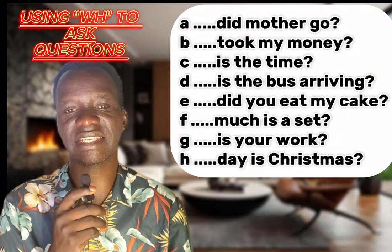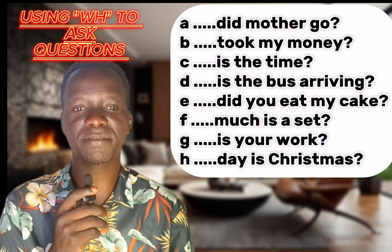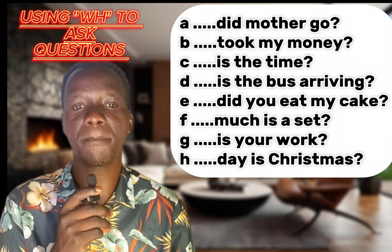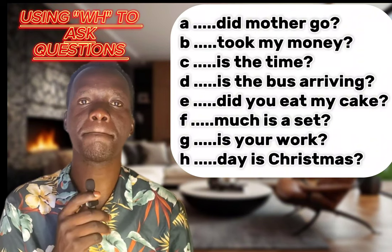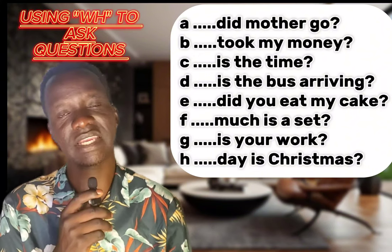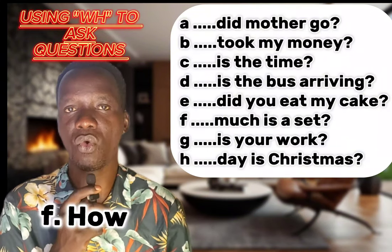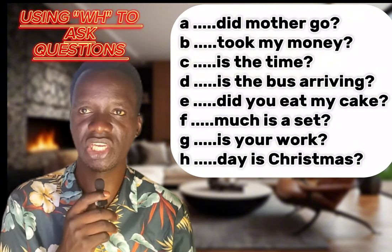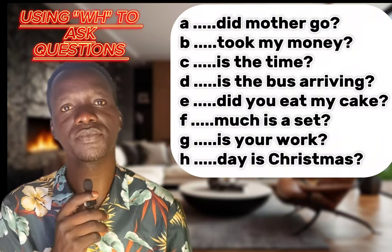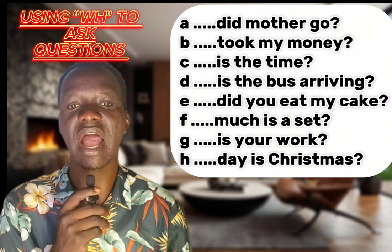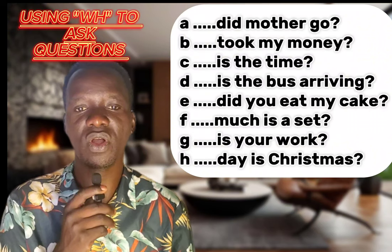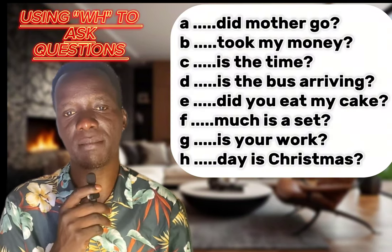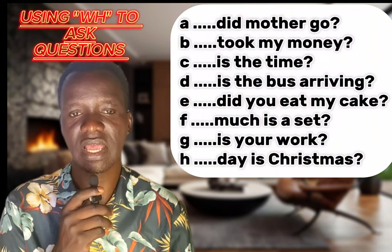F: '_____ much is a set?' I didn't explain this earlier because it is not a WH word — it only starts with H. When you see 'much,' it is talking about amount or money. If you are asking anything concerning 'much' or money, you use 'how.' For example: 'How much sugar did you put in the tea?' Much will always go with 'how.' Since 'how' is used to ask about price and degree, we use 'how much.'